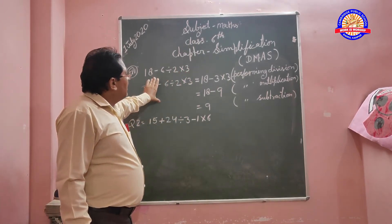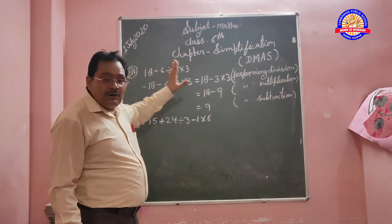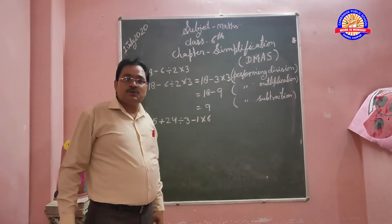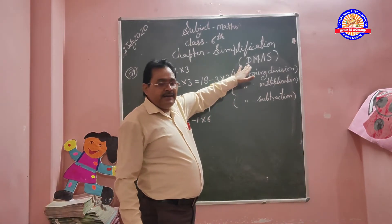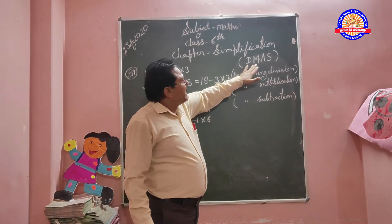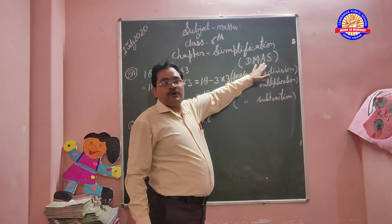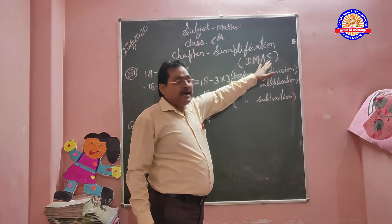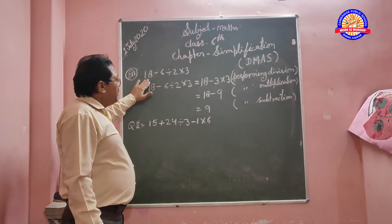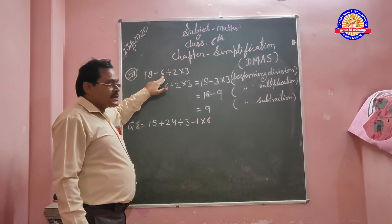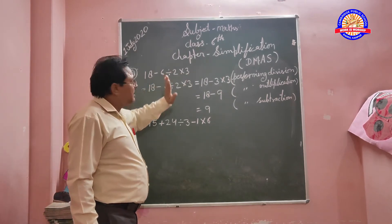Simplification uses the DMAS rule. D is for divide, M for multiplication, A for addition, and S for subtraction. For example: 18 minus 6 divided by 2 into 3.